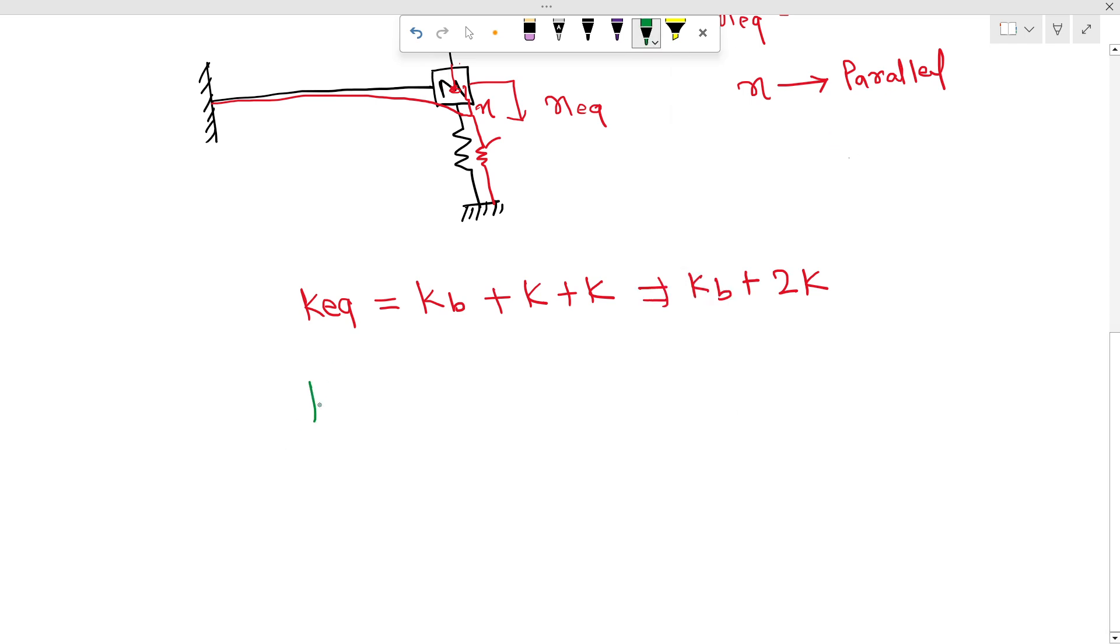Now we know that stiffness of cantilever beam, the formula is 3EI upon L cubed. That equals 3E is given 22000, it is in MPa, so times 10 raised to 6, times the moment of inertia is given 1.2 times 10 raised to minus 4